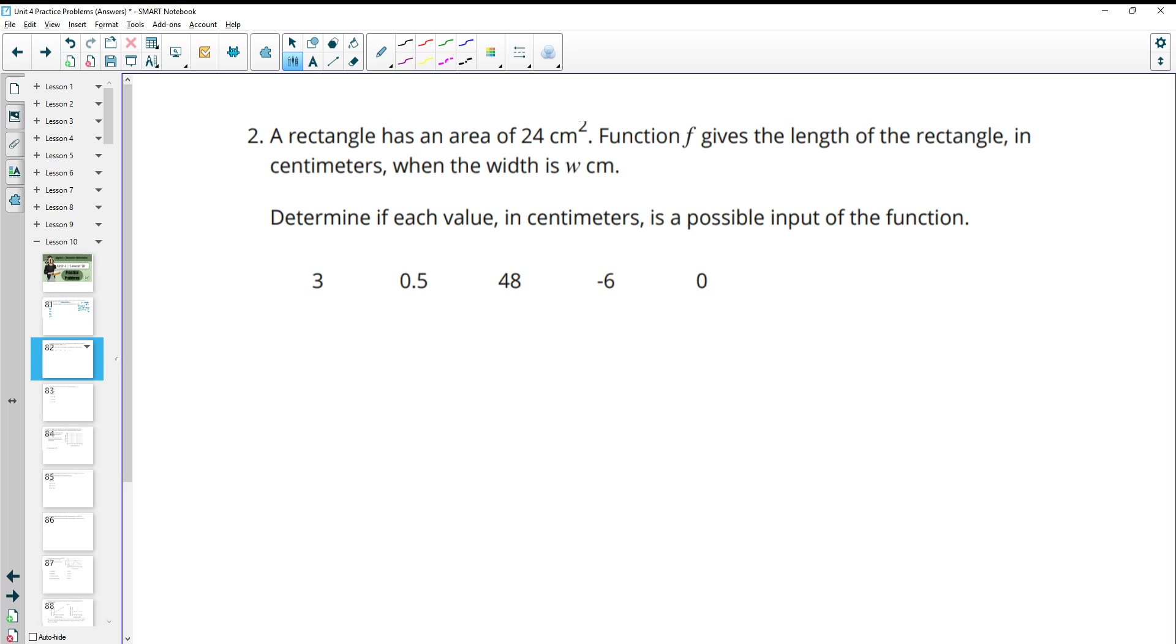Number two, a rectangle has an area of 24 centimeters squared. Function F gives the length of the rectangle in centimeters when its width is W centimeters. Determine if each value in centimeters is a possible input for the function. So now when we're talking inputs, we're talking measurements. And measurements can be decimals, but they can't be zero and they can't be negative. So to get a rectangle, these measurements need to be positive numbers, but they can be whole or decimal.